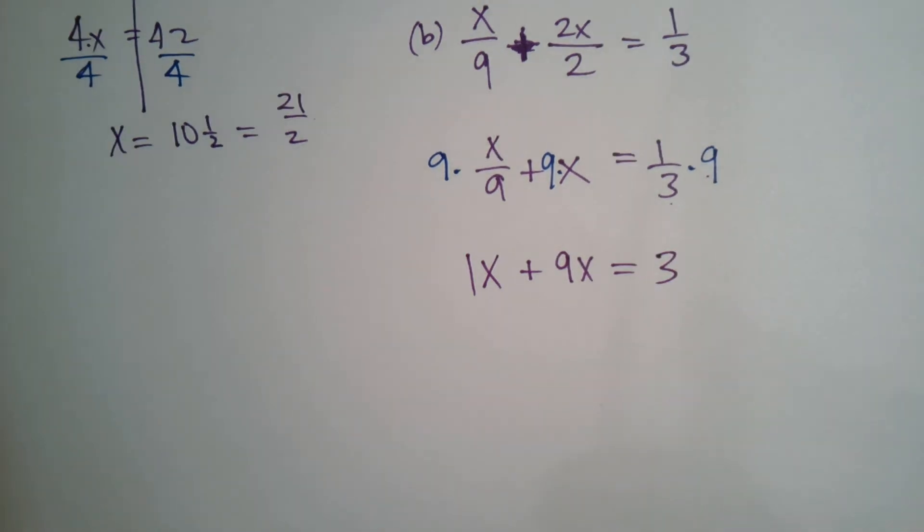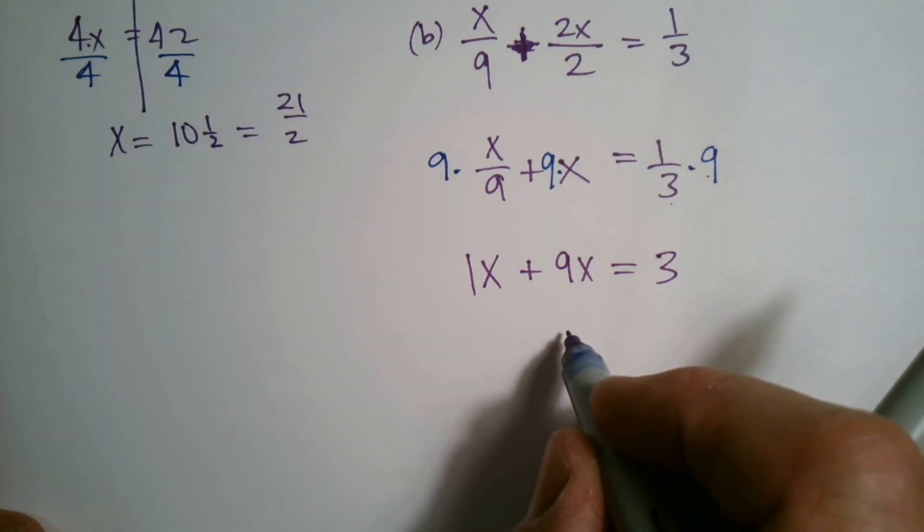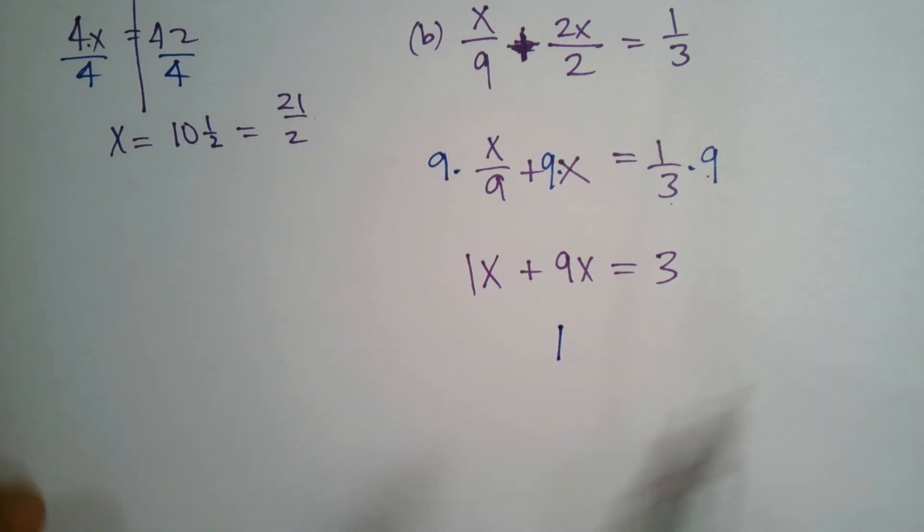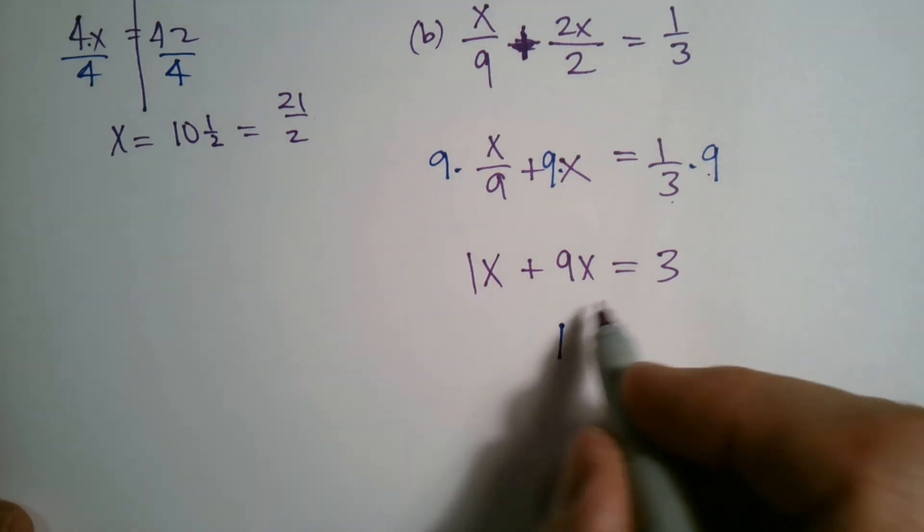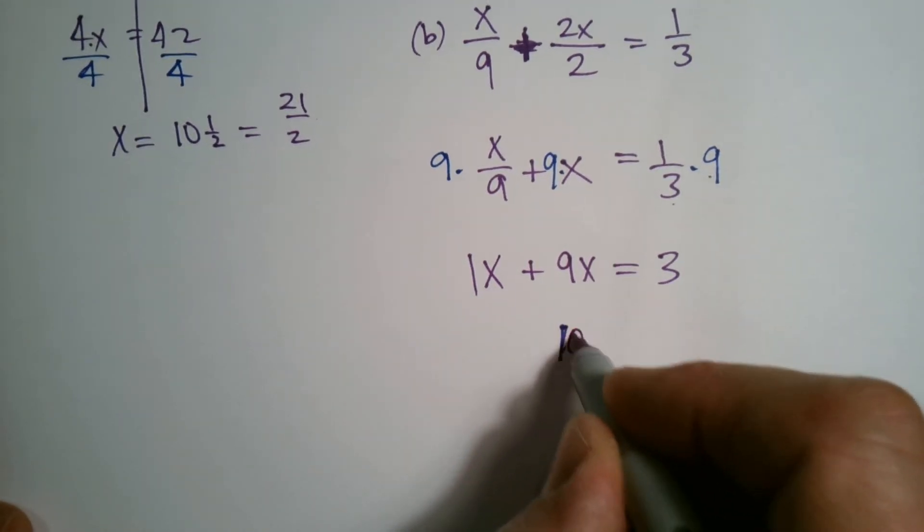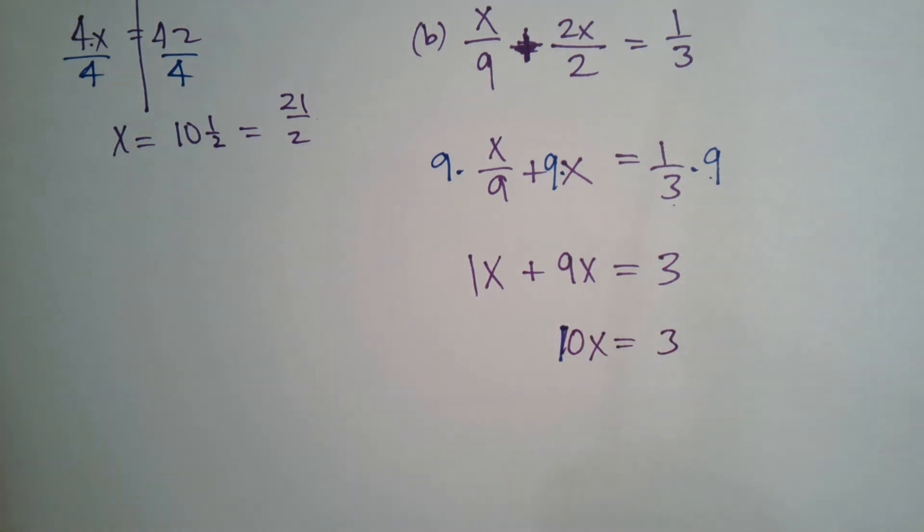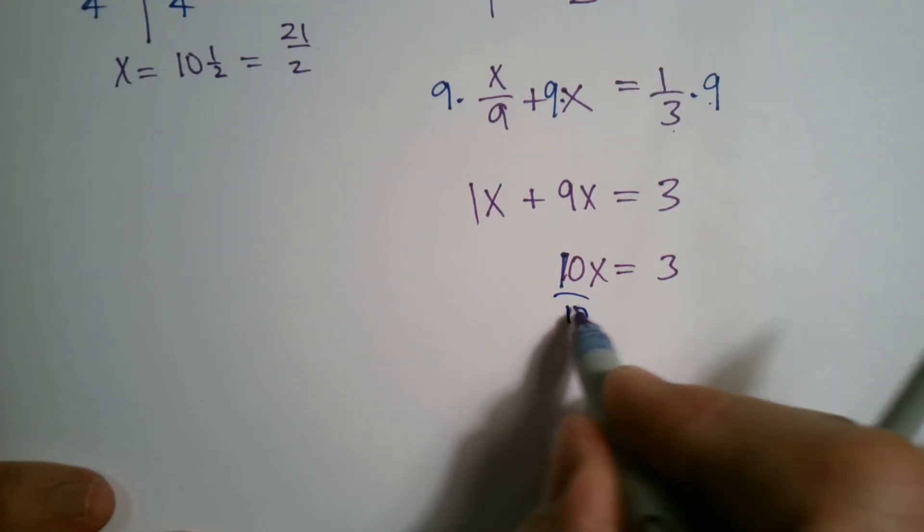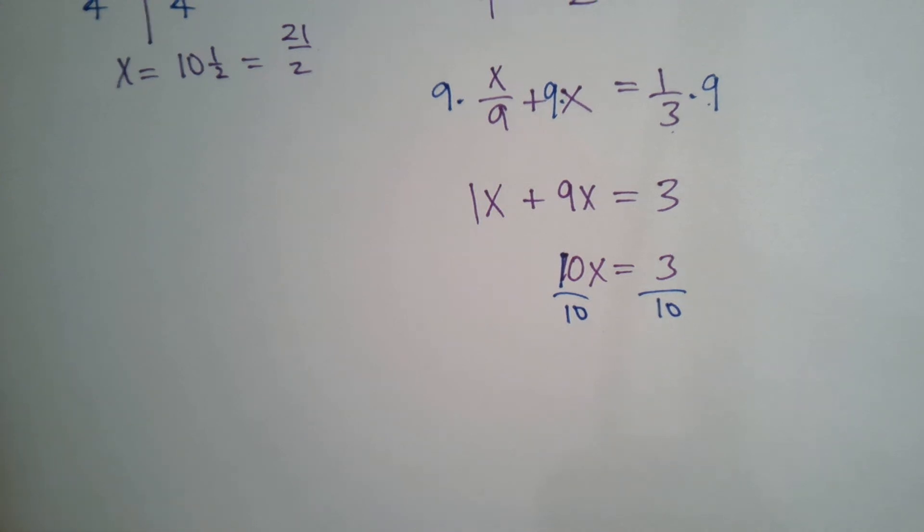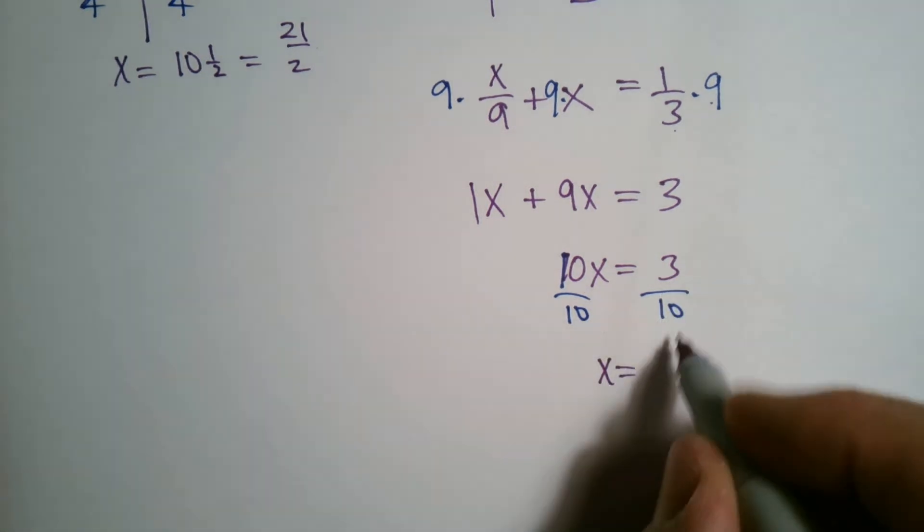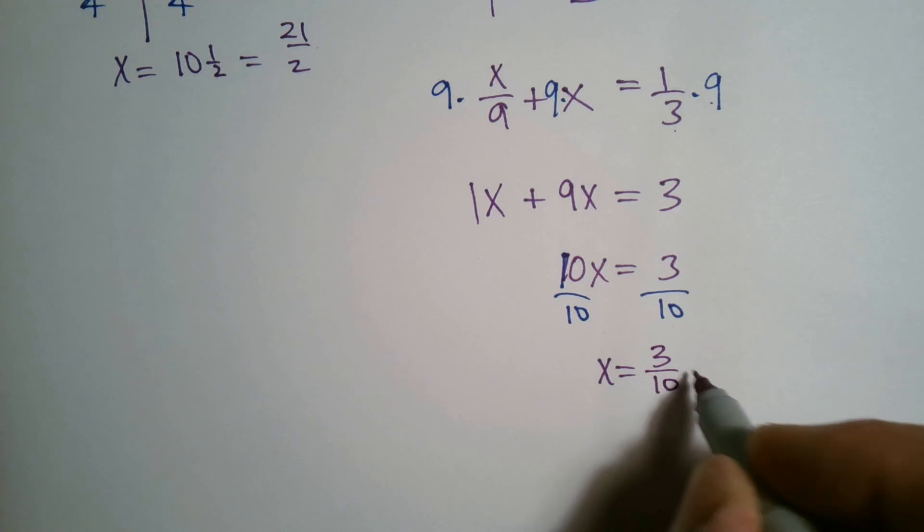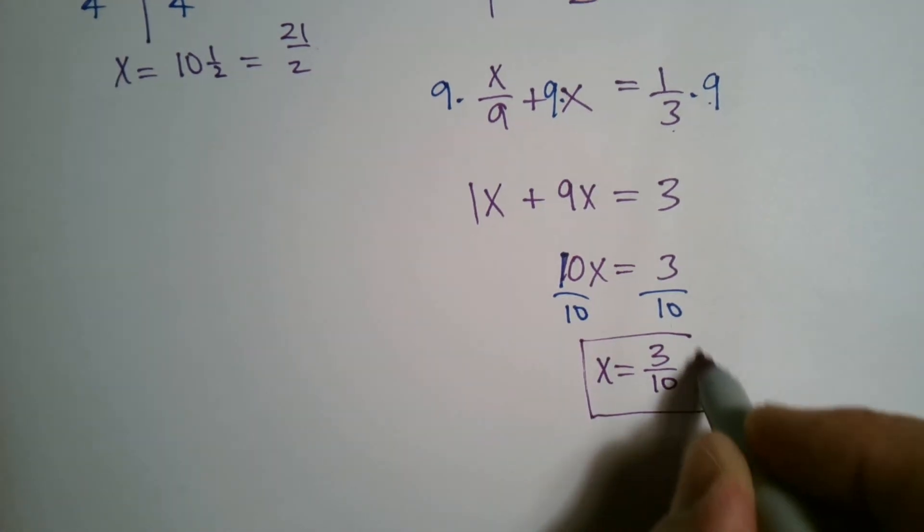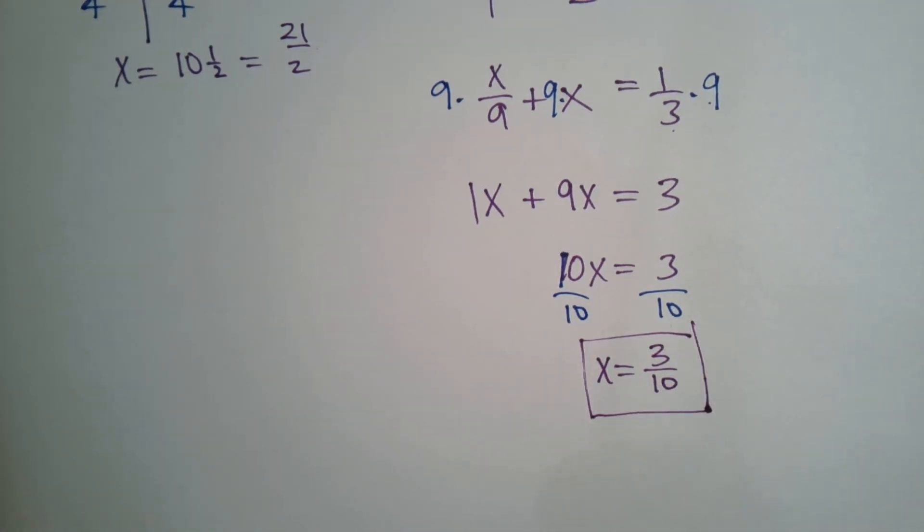So now I have a nice equation without fractions. 1x plus 9x is 10x equals 3. Divide both sides by 10 to eliminate the 10 and isolate the x and 3 over 10 is 3 tenths, which could be written as a fraction or 3 tenths as a decimal. Okay, there you go.